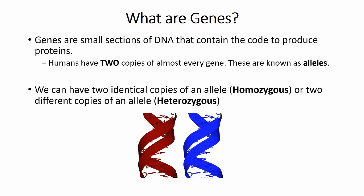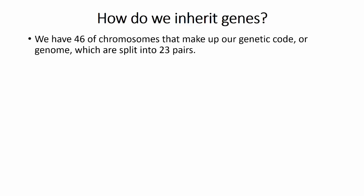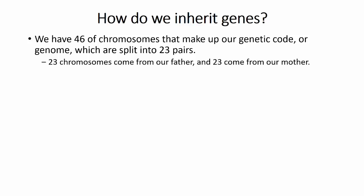Which alleles we possess depends on what we inherit from our parents. As I mentioned in a previous video, our DNA is stored in 46 chromosomes, split into 23 pairs. The reason for this pairing is that we inherit 23 chromosomes from each of our parents. As we have two copies of each chromosome, we therefore have two copies of each gene, one copy coming from each parent.